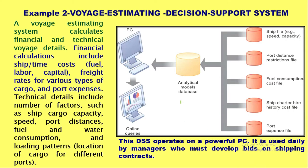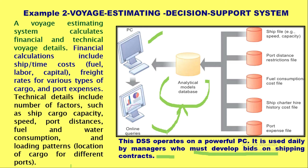Example two: a voyage estimating decision support system operates on a powerful PC and is used by managers to develop bids on shipping contracts. It uses analytical models and databases with online queries to perform analysis on various ships, their capacity and feedback, various ports, fuel consumption and associated costs, and the history of ship charter and port expense files. Based on this analysis, bids are developed for shipping contracts.